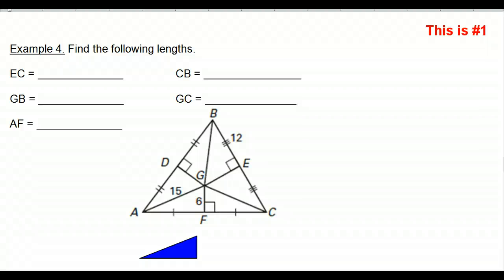Now we should be ready to do example 4. We're supposed to find all of these lengths. Thing number 1, they did not mention whether or not this point G was the circumcenter. But we should know if it's the circumcenter or not. Is point G the circumcenter of the triangle? Well, how do we build the circumcenter? We build the circumcenter by making perpendicular bisectors.